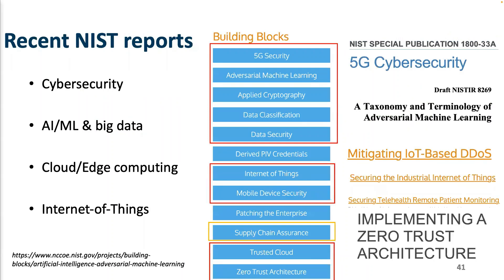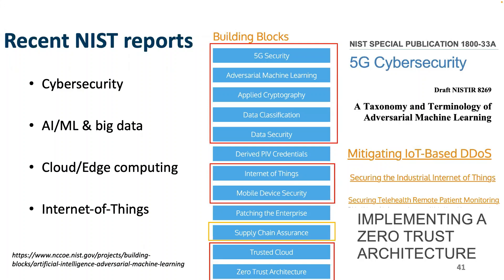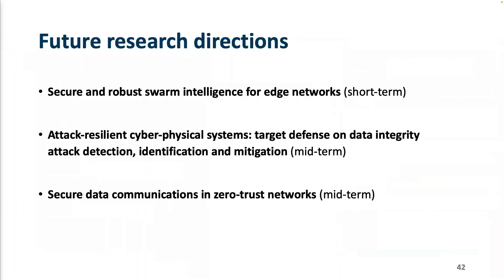Other federal agencies like NIST — the National Institute of Standards and Technology under the U.S. Department of Commerce — are issuing multiple white papers on 5G security, supply chain assurance, Internet of Things data security, and trusted cloud. My personal short-term direction is to explore building a secure and robust swarm intelligence for edge networks. For the mid-to-long term, I want to build attack-resilient cyber-physical systems and establish secure data communications.